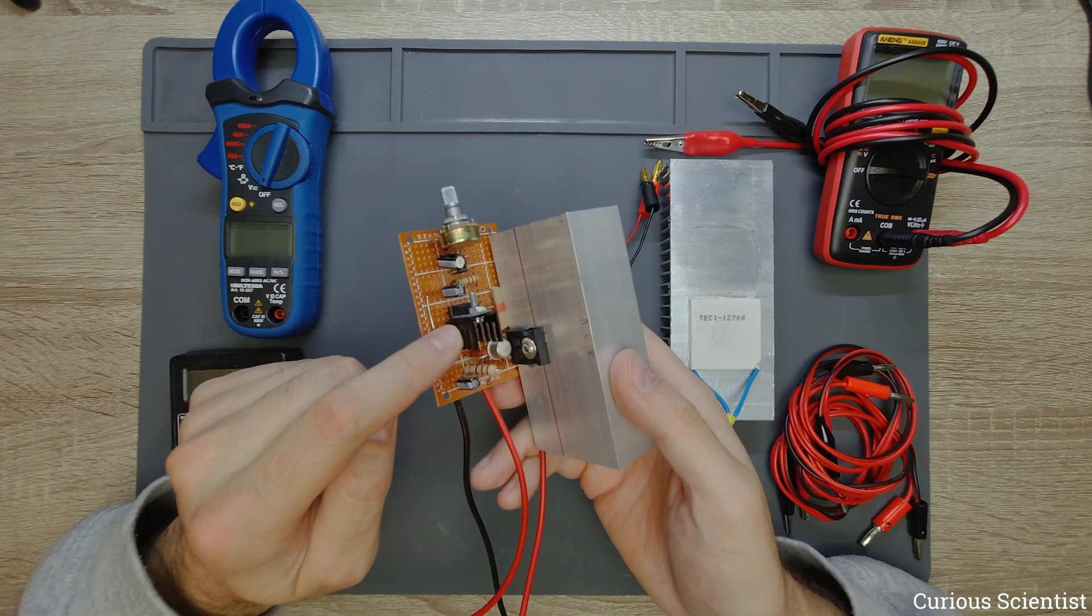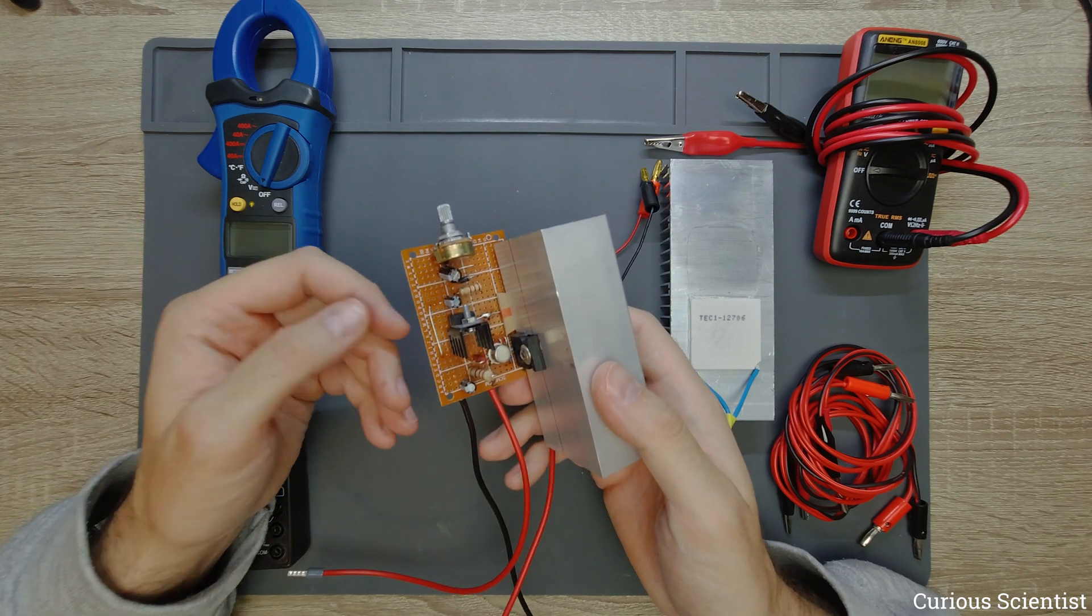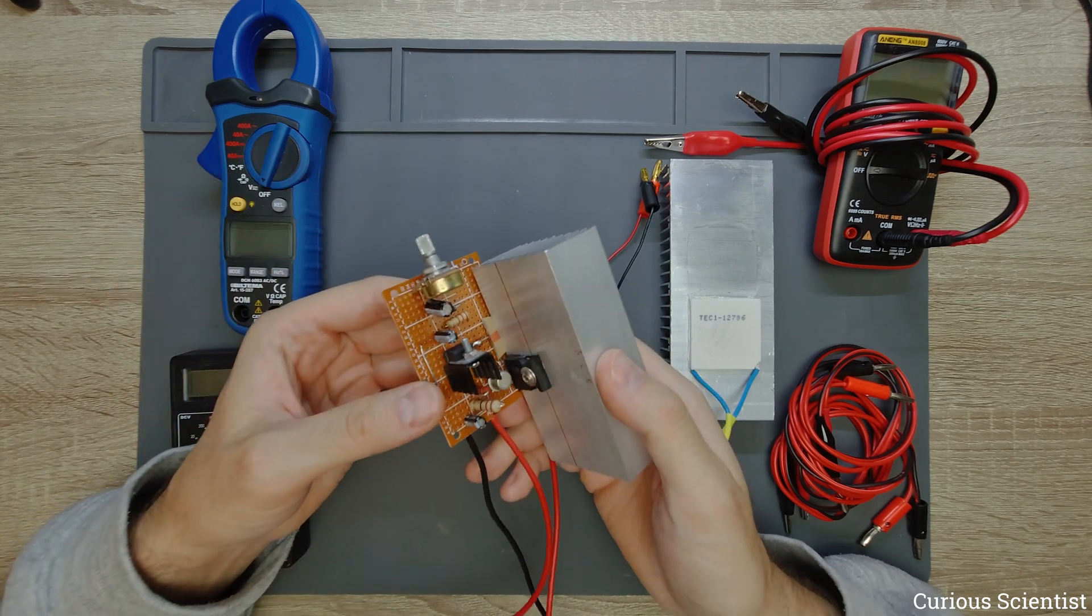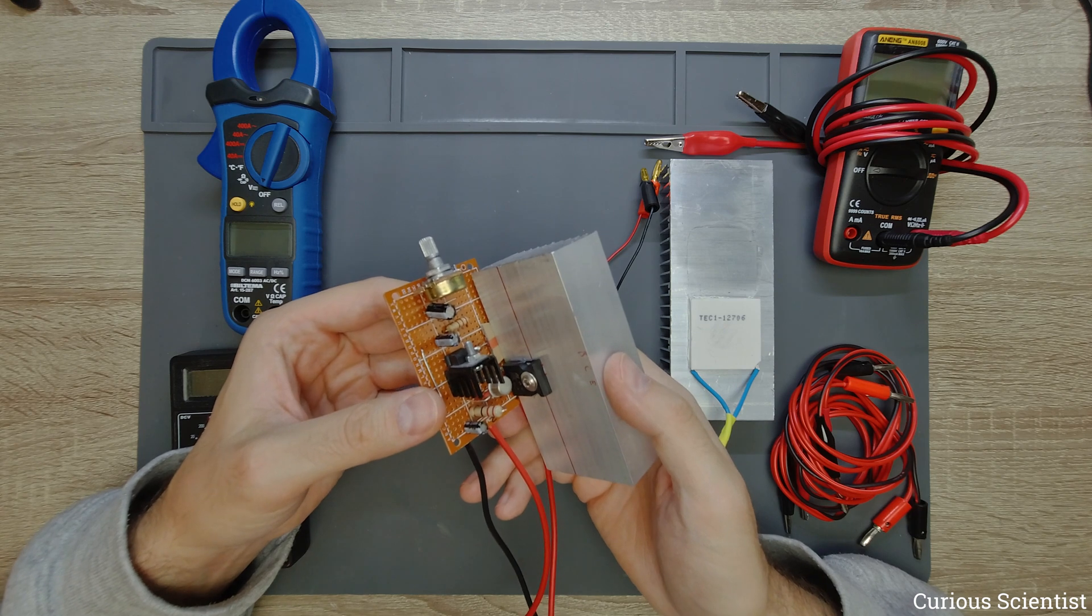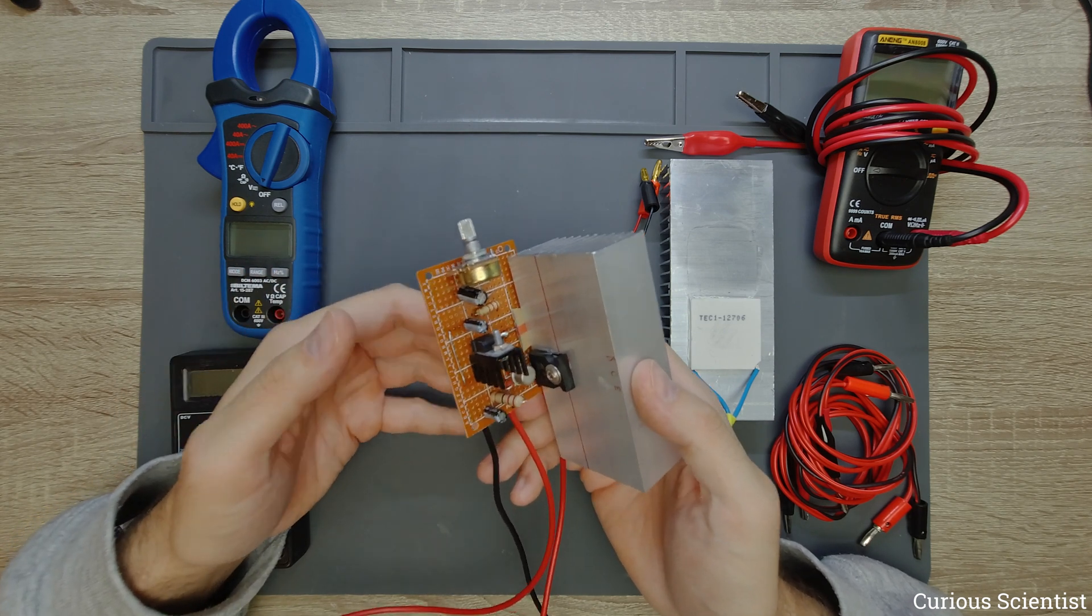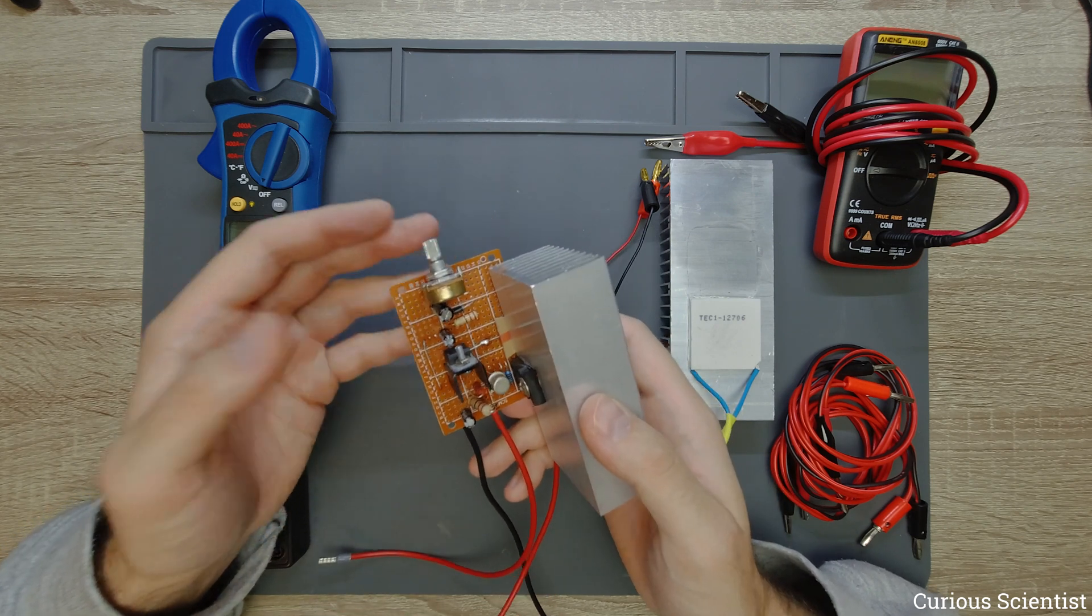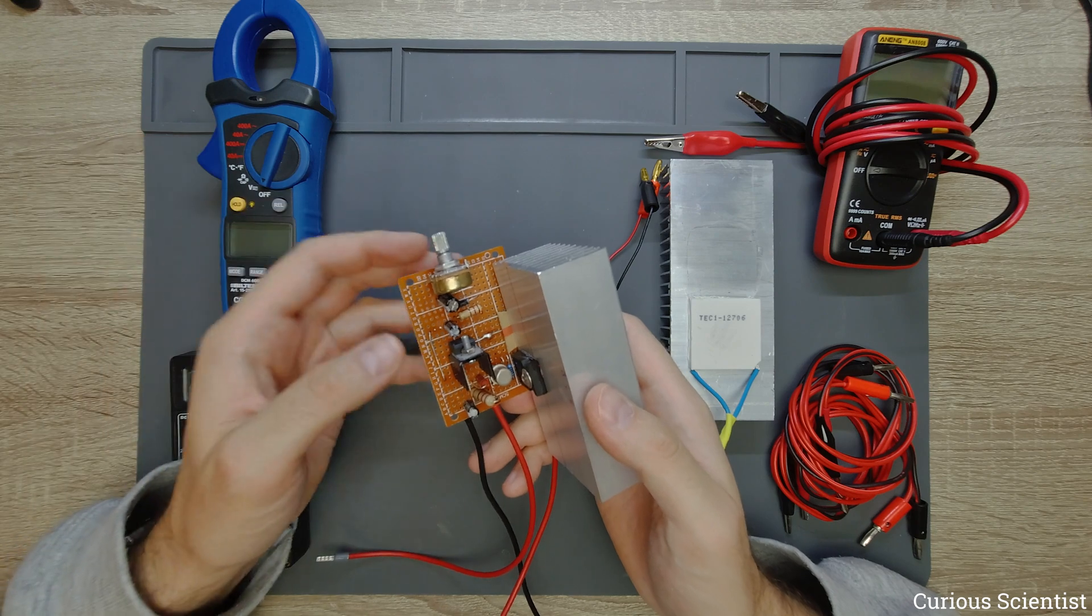As I mentioned we dissipate a lot of heat here because this is a so called linear power supply, so it's very inefficient. If you want to go for efficiency then of course you have to use the switching power supply which requires high frequency switching.